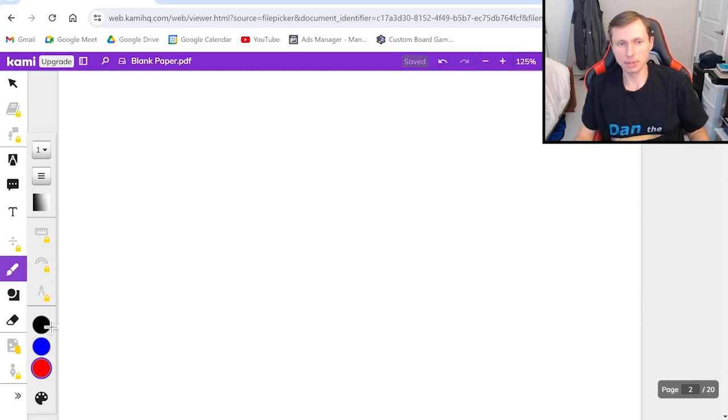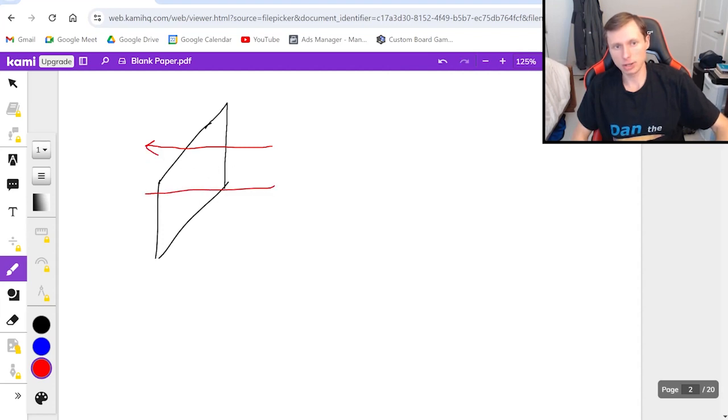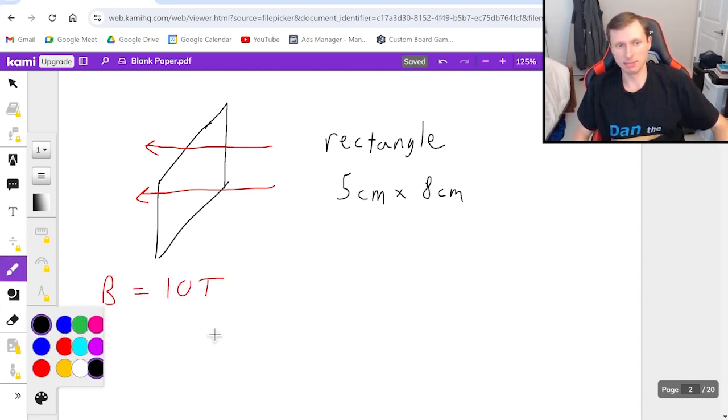Now we're going to do a couple examples with magnetic flux and then we'll be done. So the first problem here, imagine I have a hoop of wire like this with the magnetic field going straight through it to the left. I'll tell you that this shape is a rectangle with side lengths 5 centimeters by 8 centimeters, and the magnetic field B is equal to 10 Tesla. What is the magnetic flux?